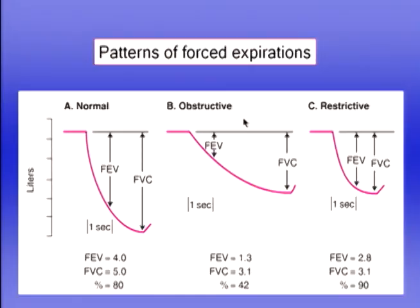The obstructive pattern, as we would expect in COPD, shows that the total amount exhaled is considerably reduced because diseased airways close prematurely at the end of expiration. More strikingly, the forced expiratory volume is extremely small due to airway obstruction. In this example, the FEV1 is only 42% of the FVC — very different from the normal 80%.